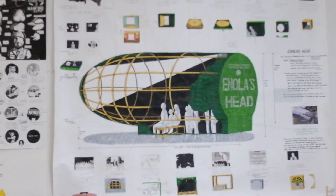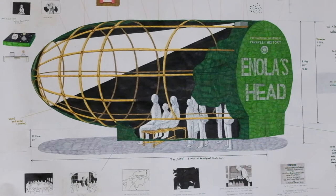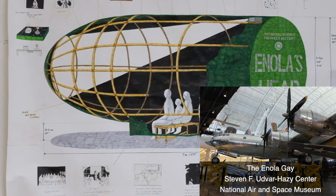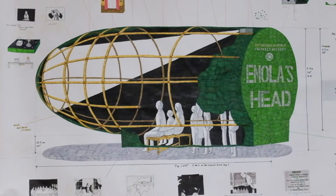This is a planning drawing for Enola's Head. This project is an alternative view of the history of Enola Gay by transforming this airplane into a theater. The Enola Gay is the B-29 Superfortress that dropped the first atomic bomb on Hiroshima on August 6, 1945, and then flew to Nagasaki for the second atomic bombing mission as a weather reconnaissance aircraft.